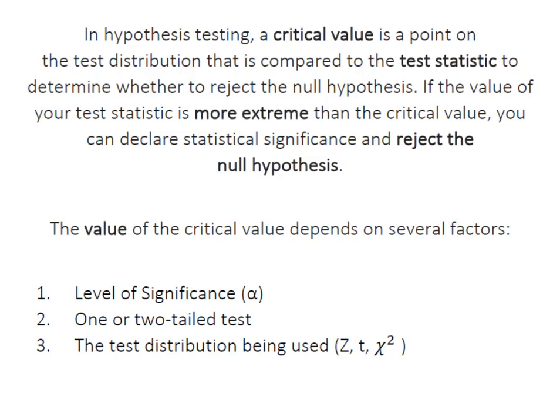The rule is pretty simple. If the value of your test statistic is more extreme or beyond the critical value, you can declare that you have statistical significance and you can reject the null hypothesis.